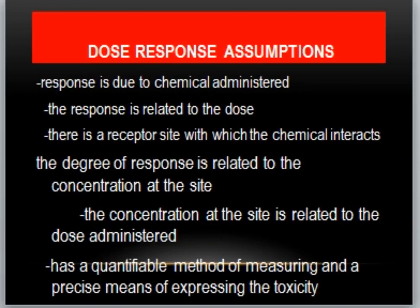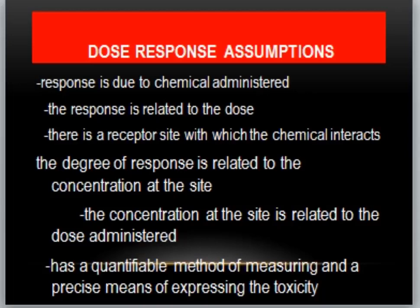There are some assumptions for the dose-response relationship. First, the response is due to the chemical administered — if there is no chemical ingestion or exposure, there is no response. Second, there must be a receptor site with which the chemical interacts — any receptor, binding target, organ, or cell. Third, the degree of response is related to concentration at the site. Fourth, the concentration at the site is related to the dose, exposure duration, or frequency of exposure.